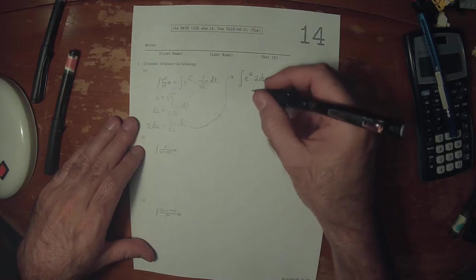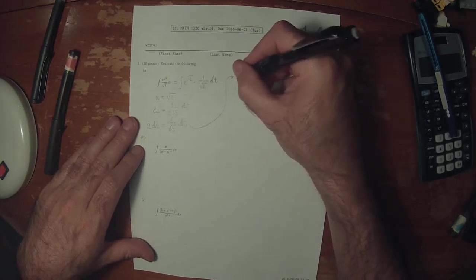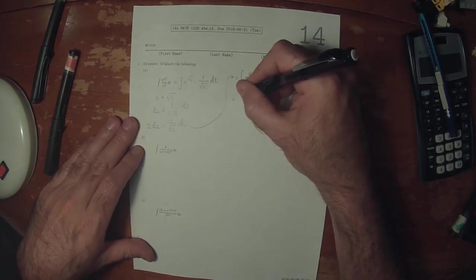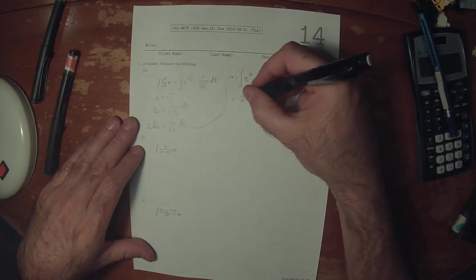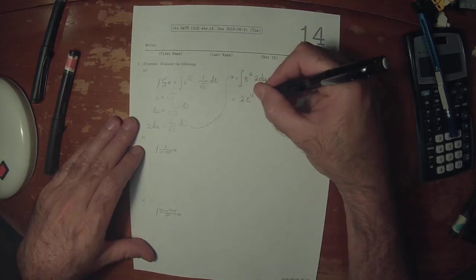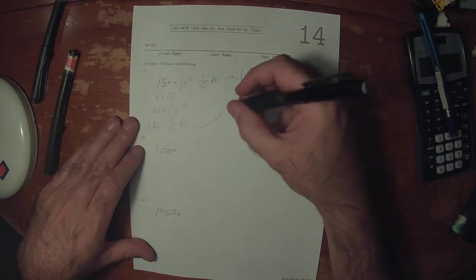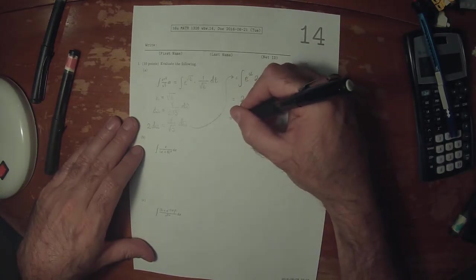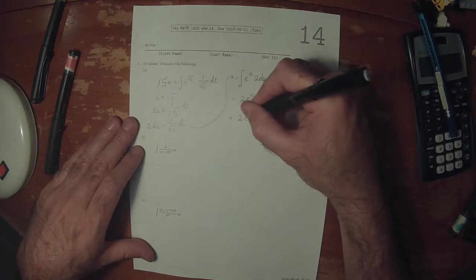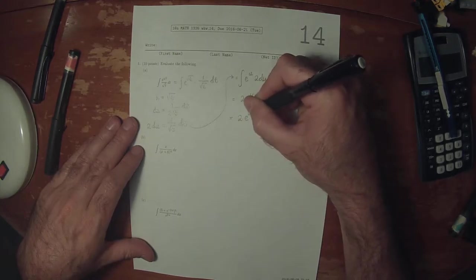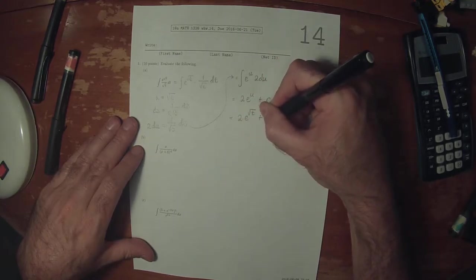So this would be 2 e to u plus some unknown constant. So 2 e to square root t plus some unknown constant.